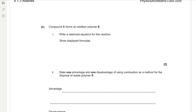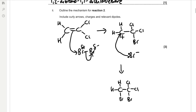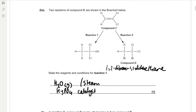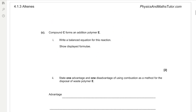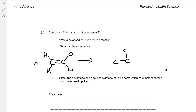Compound C forms an addition polymer E. Write a balanced equation for this reaction — show a displayed formula. Compound C is our alkene, and to form an addition polymer the double bond has to open up and the units join together. We need to represent it like ethene when we draw it, then draw all our groups, and then the repeat unit — draw long side bonds and brackets.